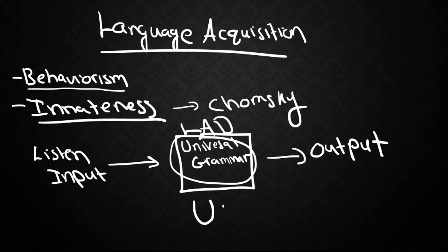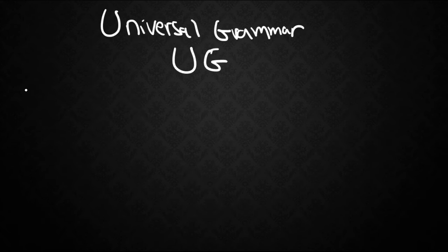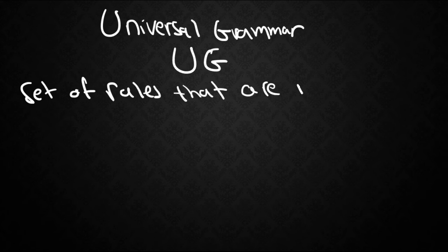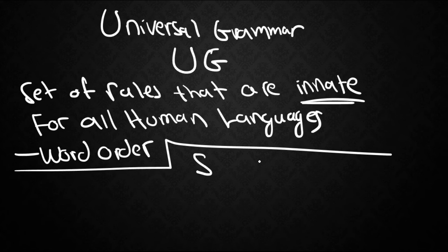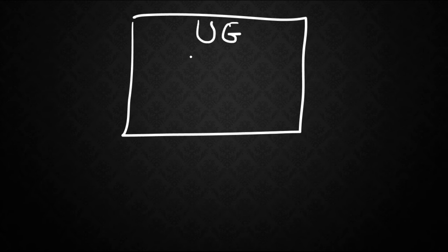So universal grammar, sometimes we call this UG for short. What is UG and why is this important for language acquisition? Universal grammar or UG is the set of rules that are innate. So we are born with these rules according to the innateness theory. And these rules are for all human languages. Basically, let's take just one very simple aspect of these rules. Let's say for example, word order. In English, it's subject and then verb and then object. In Arabic, it's verb, subject, object. How do we get these orders correct? According to the innateness theory, inside the language acquisition device, there is the universal grammar. This universal grammar has a lot of rules.